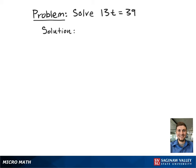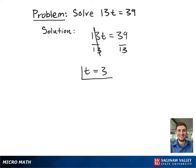Here we have the linear equation 13t equals 39. We're going to rewrite it so that we can see it better. Now we want to get t by itself, so we're going to divide both sides by 13. That cancels out the left-hand side, and that leaves you with t equals 39 divided by 13, which is the same as 3.